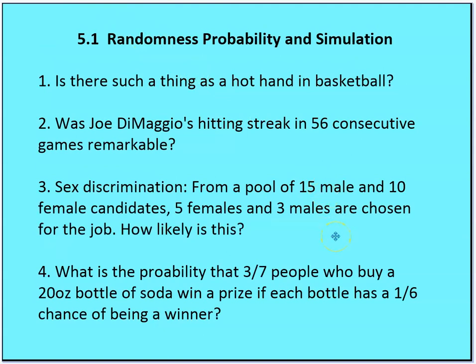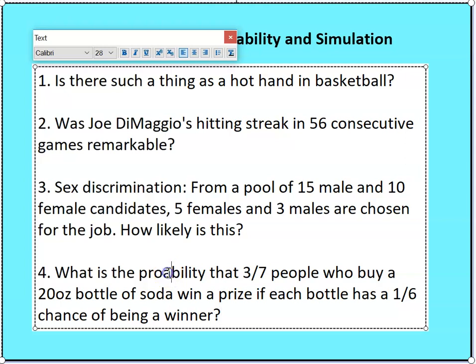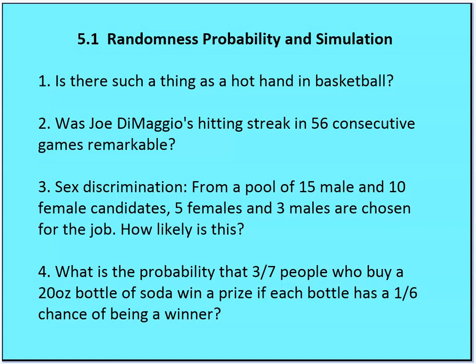Some things you might want to think about simulating: Is there such a thing as a hot hand in basketball? There's been a lot of research on this and the answer is no. Was Joe DiMaggio's hitting streak in 56 consecutive games remarkable? Sex discrimination — from a pool of 15 male and 10 female candidates, five males and three females are chosen; how likely is this? What is the probability that three out of seven people who buy a 20-ounce bottle of soda win a prize if each bottle has a 1-in-6 chance of being a winner? These get into more complicated probabilities.